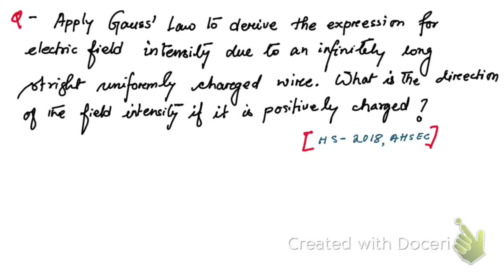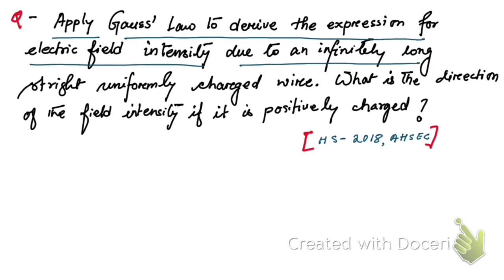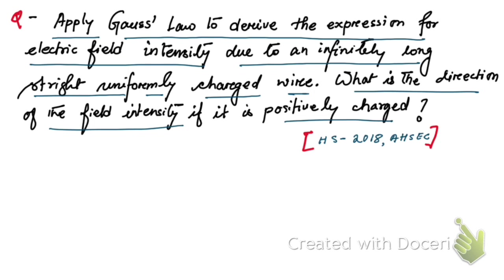Hello students. This question asks us to apply Gauss's law to derive the expression for electric field intensity due to an infinitely long straight and uniformly charged wire. If the wire is positively charged, we also need to determine the direction of the field intensity. This question was asked in the 2018 HSC final of the Higher Secondary Division Council.